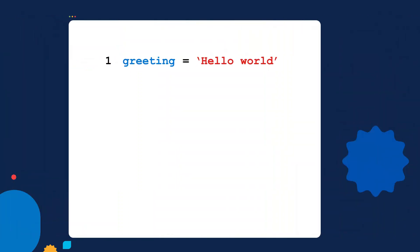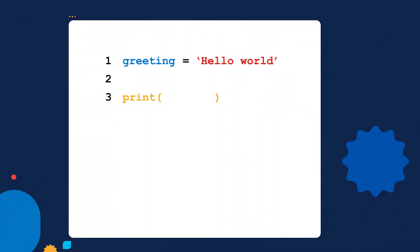That takes us to step number two — we're going to print out the value of the variable by referencing the variable's name. Let's go back to our script on line three. I'm going to use something called the print function. Think of the print function as a tool that comes with Python that allows you to print things out. Inside the print function's parentheses, I'm going to specify the name of the variable I want to print out, which is the greeting variable. I then save the script.